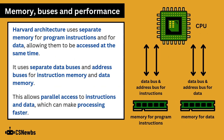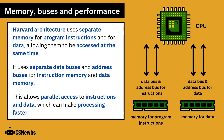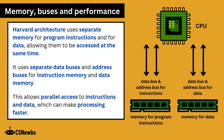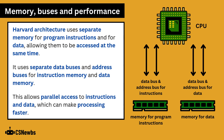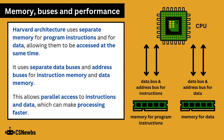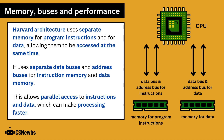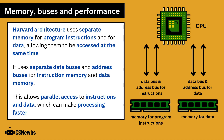Harvard architecture uses separate memory for program instructions and for data, allowing them to be accessed at the same time. It uses separate data buses and address buses for instruction memory and data memory. This allows parallel access to instructions and data, which can make processing faster.